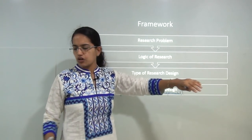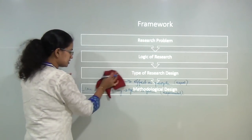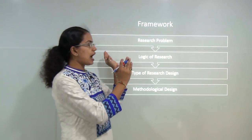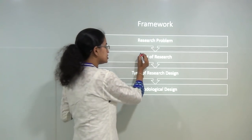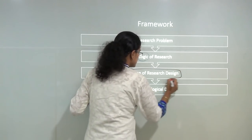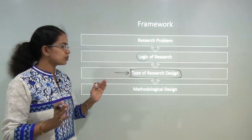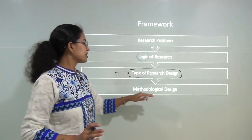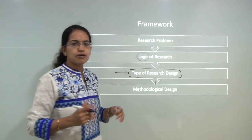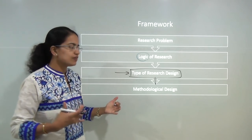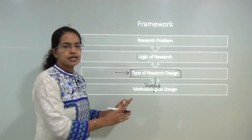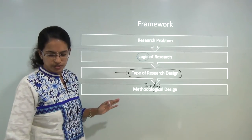Before we move to the individual types of research, let's understand the basic framework, which we have covered previously in the session on research methodology. We have a research problem, then the logic of the research — why we are using a certain research — and then we use a type of research design, which is our entire focus today. Finally, based on the type of research design, you devise a methodology. For example, if the research is quantitative, more statistical analysis will be used.